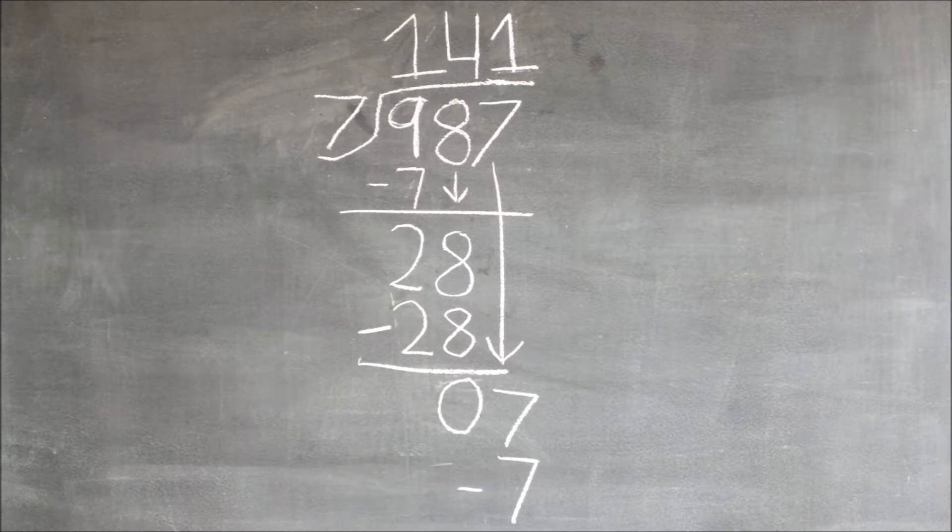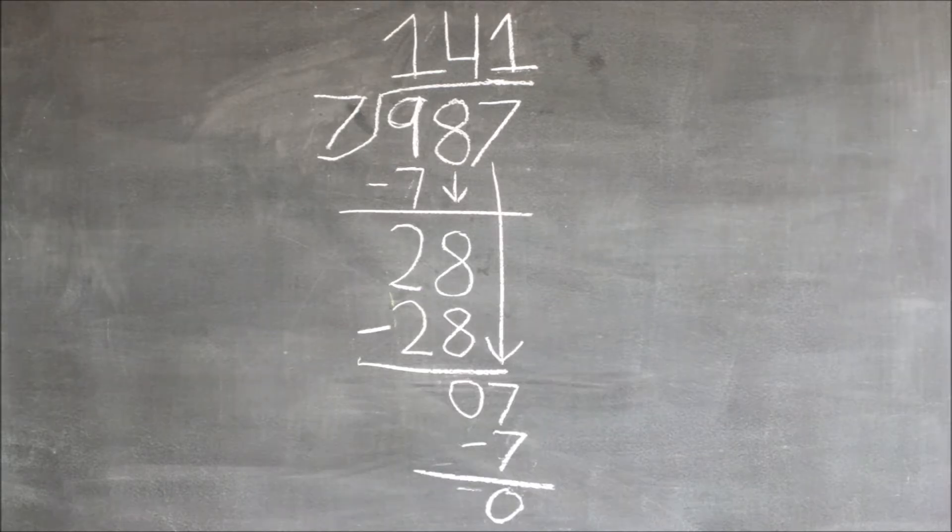We then have to subtract the sevens, and seven minus seven equals zero.